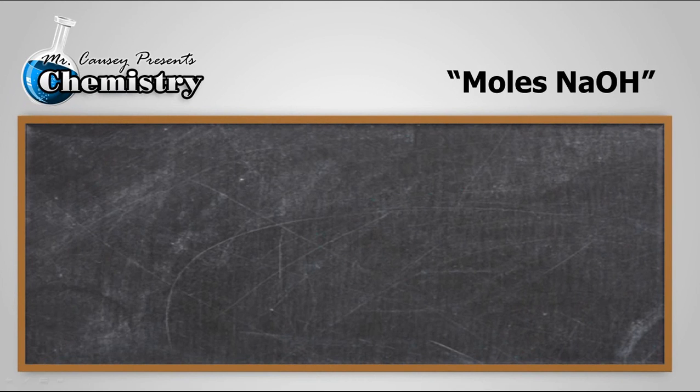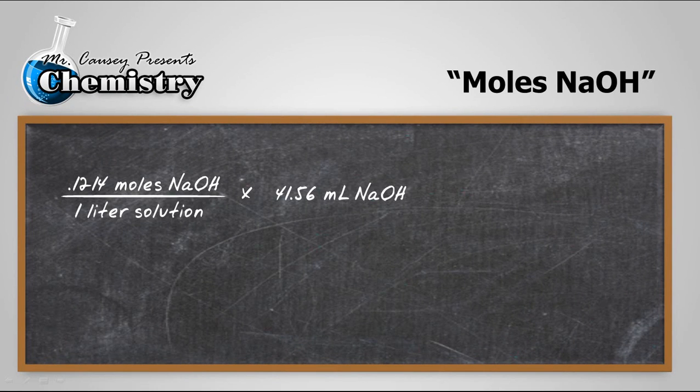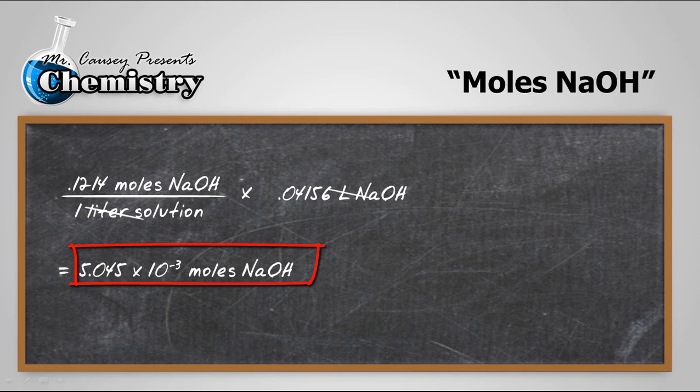So first let's do the mole calculation for sodium hydroxide. There's our moles. And remember that molarity means moles per liter of solution. All we have to do is multiply that by the milliliters. Now we're going to need to change the milliliters there to liters. So let's do that. And we'll move the decimal three places to the left. Cross out our liters. Then we're going to plug and chug. And here's our answer. Using four sig figs we get 5.045 times 10 to the negative 3 moles sodium hydroxide.